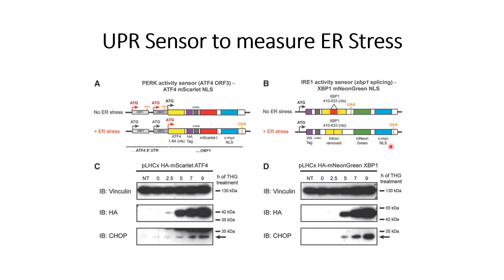The same validation was done for XBP1. The mNeonGreen construct also contains an HA-tag, so it can be detected by the anti-HA antibody. In this case, no response was seen at 2.5 hours, but after 5, 7, and 9 hours the western blot showed presence of the translated construct. At the same time, CHOP also started to appear, confirming both signals represent ER stress, as proven by the western blot.